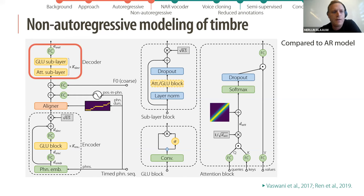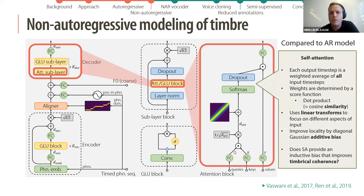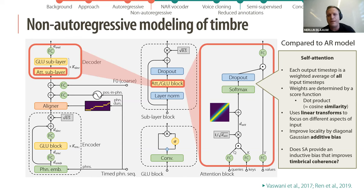Except that here we have interleaved attention layers and convolutional layers. The attention layers are self-attention, an operation where each output time step is a weighted average of all input time steps. The weights are determined by a score function — in our case, the scaled dot product, closely related to cosine similarity. There are also linear transformations that allow self-attention to focus on different aspects of the input.